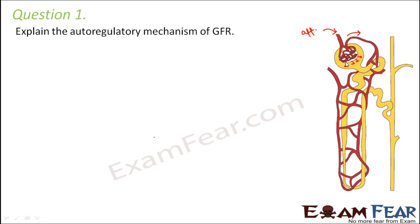Now what controls the glomerular filtration rate, so that neither too much nor too little filtrate is formed? There is a mechanism which regulates the glomerular filtration rate, and this mechanism is auto-regulatory — meaning there is no involvement of any other system or organ. It itself regulates the GFR.